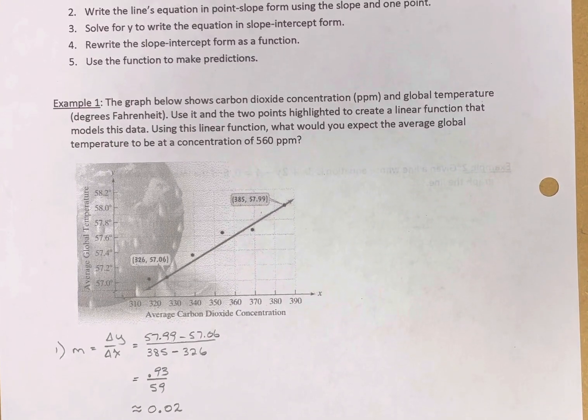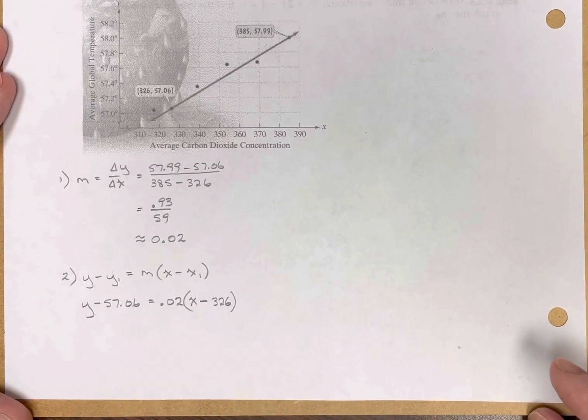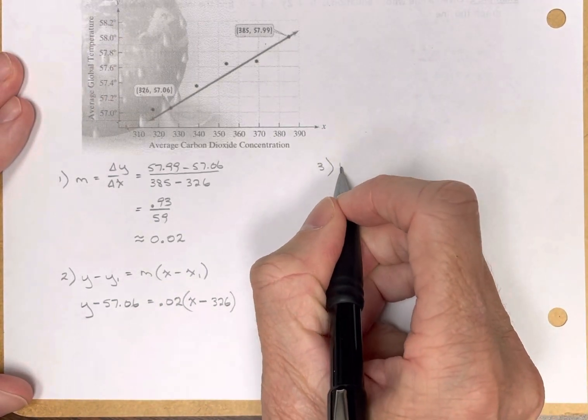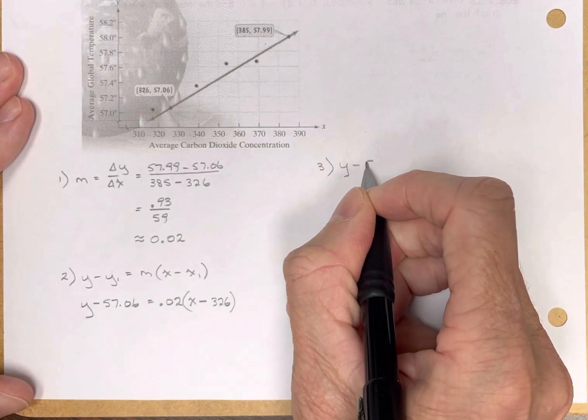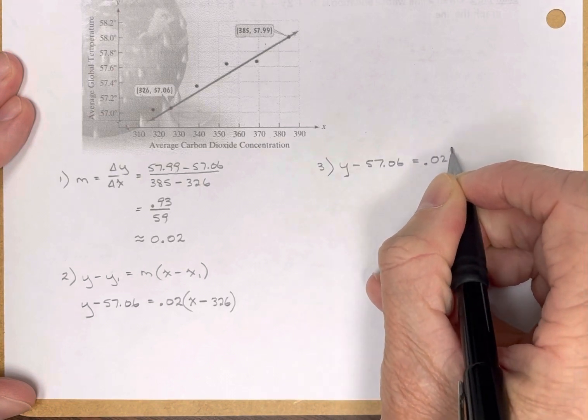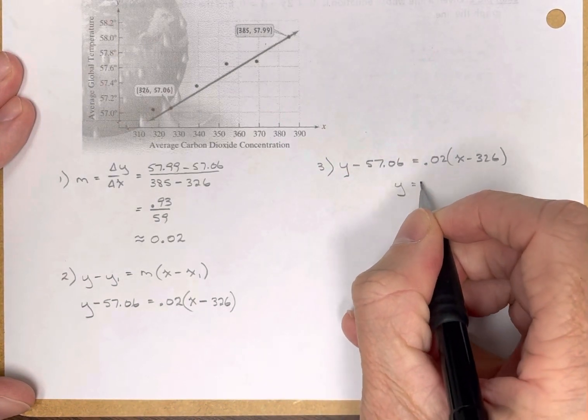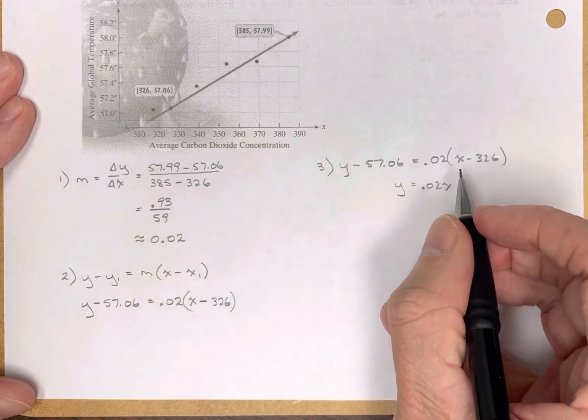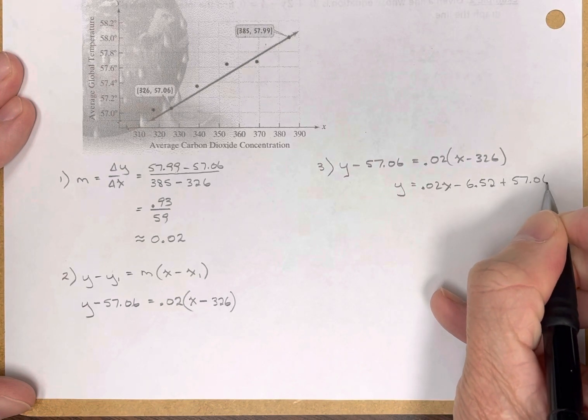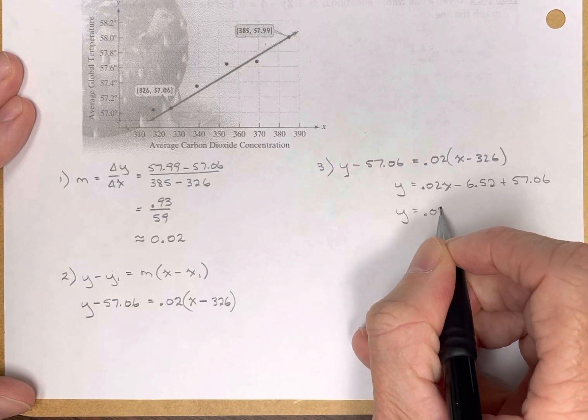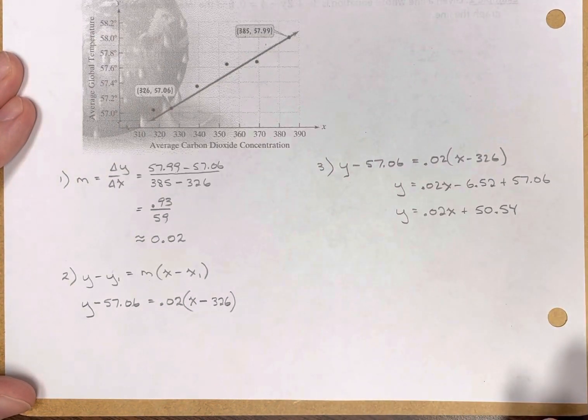Now to make it a function, we need to have a y equal. So let's go back up here to step number three. Solve for y to write the equation in slope-intercept form. So I'm going to go back. I'll do three up here. My equation is y. I'll write it out first. Y minus 57.06 is equal to 0.02 times x minus 326. Let's now solve it for y. Y is equal to 0.02x. I'm going to distribute my 0.02 minus 6.52, I'll move this over, plus 57.06. That's cleaned up the right side. Y is equal to mx. And then my b is 50.54. So now I have it in slope-intercept form.